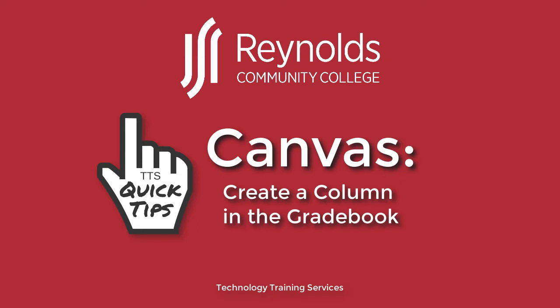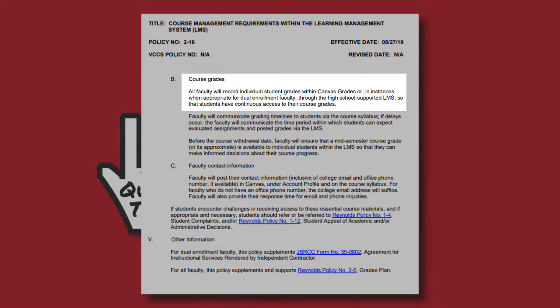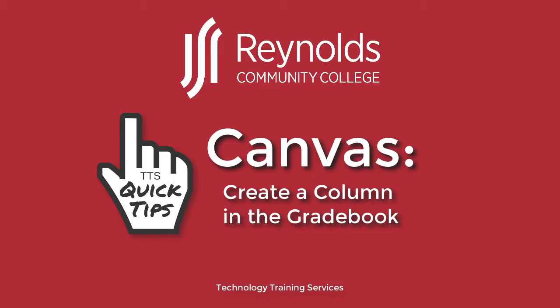There are several reasons why you may want to add a column, however most of them center on the ability to manually grade an assignment, quiz, or test. This is used frequently in face-to-face and hybrid style courses. For example, if you've handed out an in-class pop quiz, you will eventually need to enter those grades into Canvas, as dictated by Reynolds Policy 2-16. Creating a column in the gradebook will allow you to manually enter those grades.